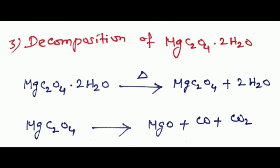Third example is decomposition of magnesium oxalate dihydrate. Here we have two peaks. First step: magnesium oxalate dihydrate, when heated, loses two water molecules to give magnesium oxalate. At the second step, magnesium oxalate changes to magnesium oxide, carbon monoxide, and carbon dioxide. Therefore, we get two peaks.